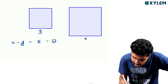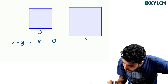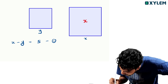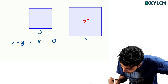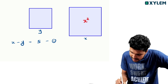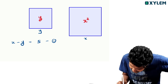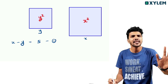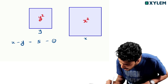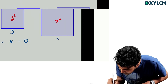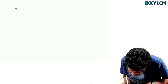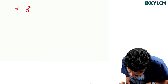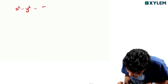Now we have to write the area of the square. The area of the side x is x-square, and the area of the side y is y-square. We have to write the area.